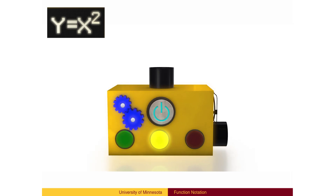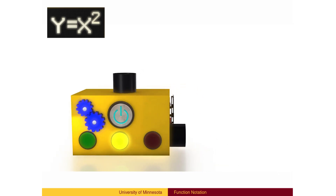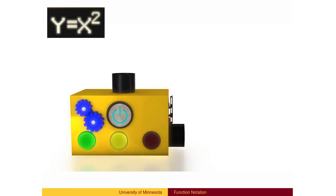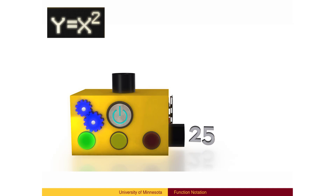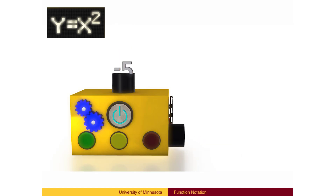Inside the box, a calculation is made. In this case, the function box squares the input of 2 to produce the answer 4. The function then also has a place to output the answer. Different inputs, such as 5, will produce different outputs — in this case, 5 squared is 25. The input negative 5 also produces the output 25.